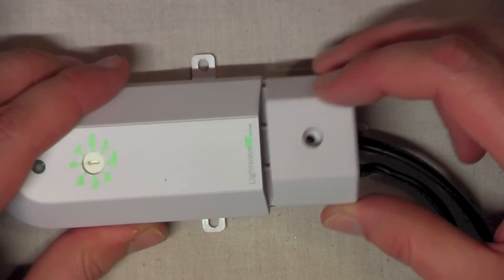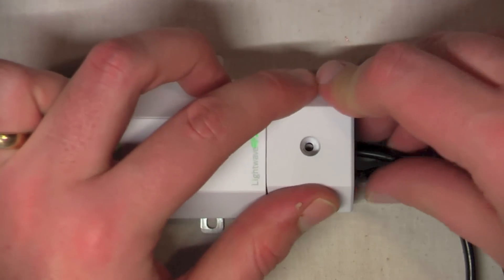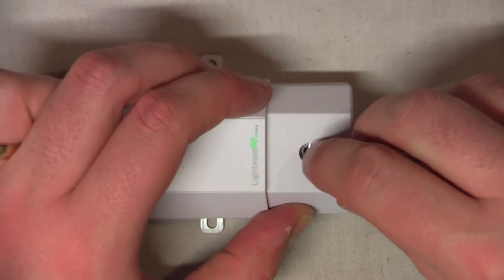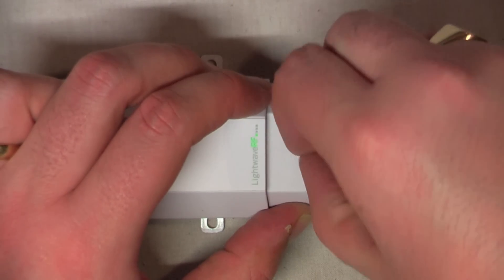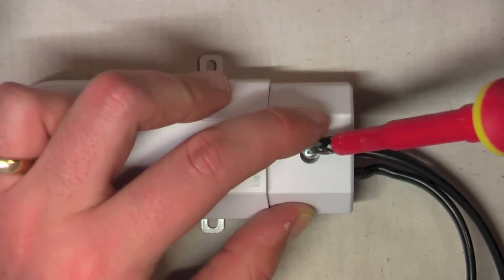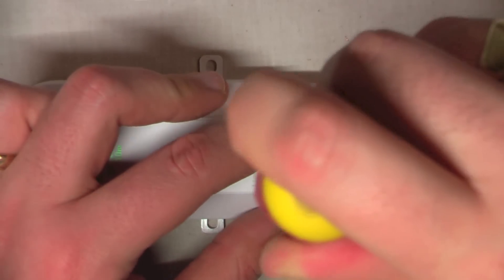Last job, pop the cover back on. A little wiggle. Just make sure it doesn't snag the cable. Screw in the top. Get that in. And we'll tighten that up with the Phillips screwdriver. There we go.